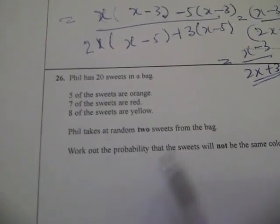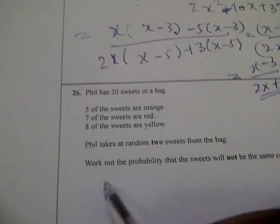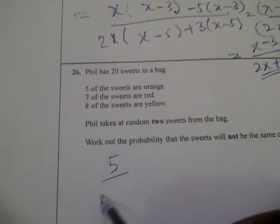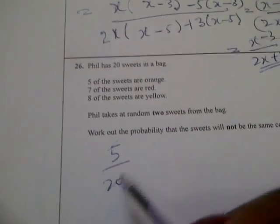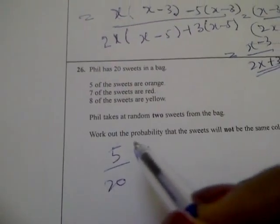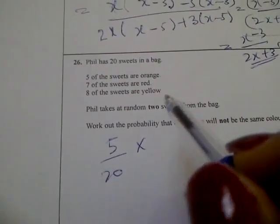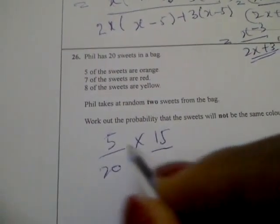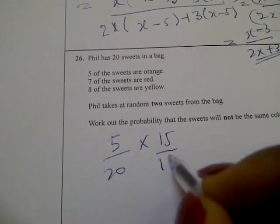Let's start with orange. Probability of orange is 5 over 20. Probability of any other color apart from orange is 15 over 19 since he didn't return it.